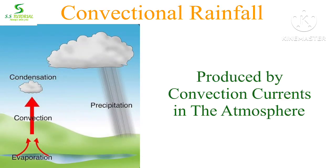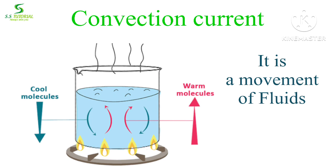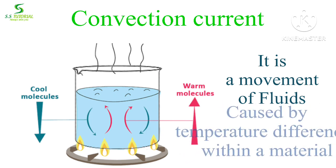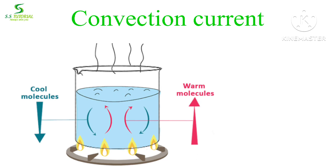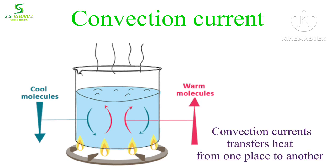Convectional rainfall means a type of rainfall which is produced by convection currents in the atmosphere. Convection current is nothing but a movement of fluid caused by temperature differences within a material. That means convection current transfers heat from one place to another.